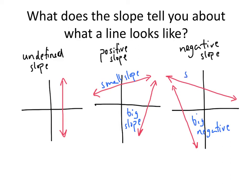A small negative number, a number that's close to zero, that's going to give me a not-so-steep line. There I'm thinking of numbers like negative 0.1, negative one half, those sorts of things will give me very shallowly sloped lines.